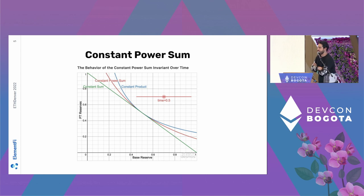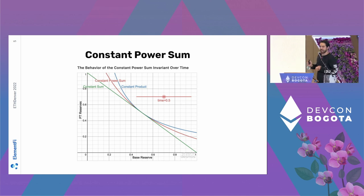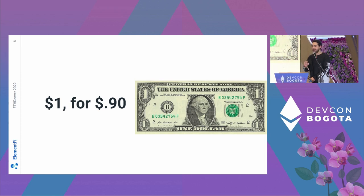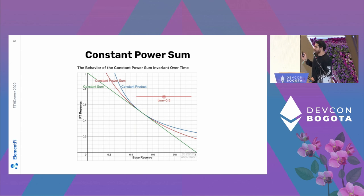We use a curve — developed mainly by Yield Space — with an alteration called a constant power sum. During the market, people can stake the principle that's locked up. It's a time-based curve following the concept of opportunity cost of money: I give you a dollar for 90 cents. If you put in a million dollars that you can't touch for a year, you can't stake it or farm with it, so I might say I'll give you 90 cents on the dollar.